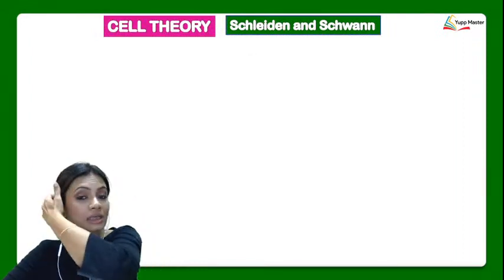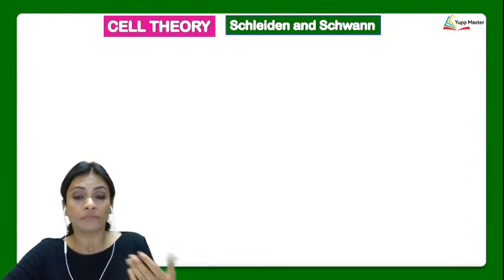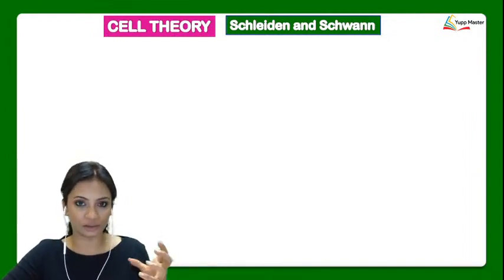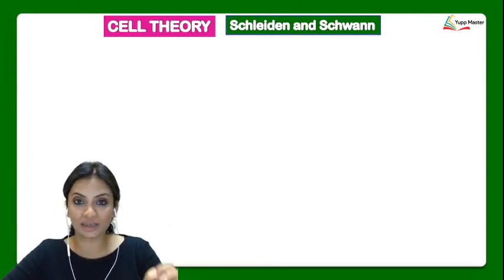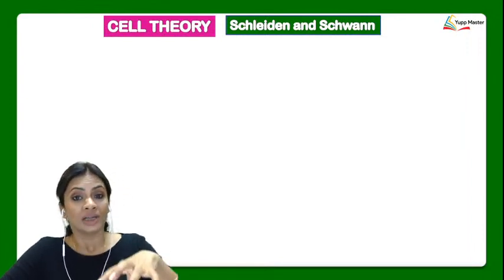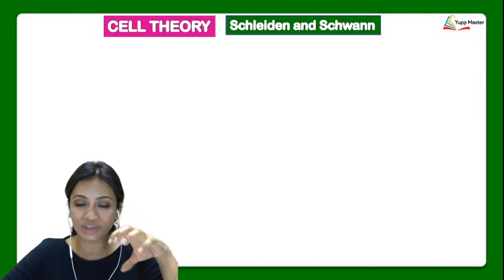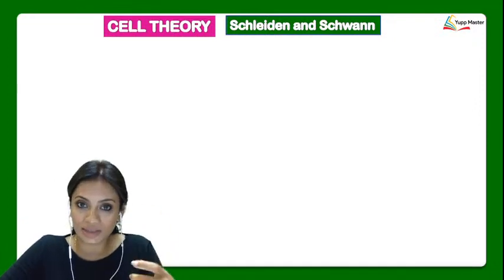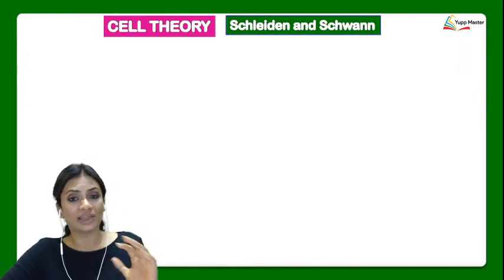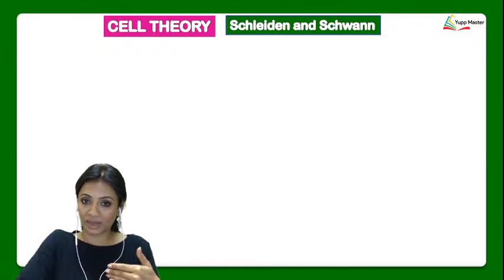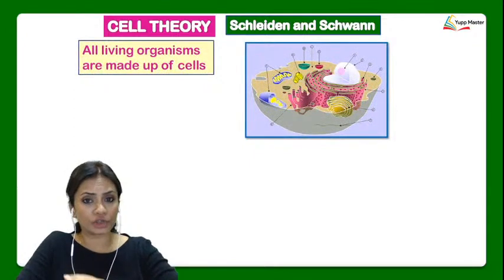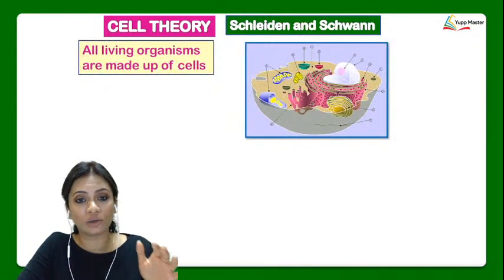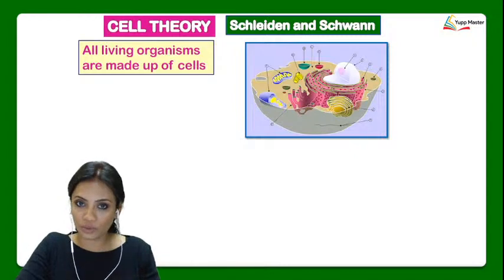Before we begin the prokaryotic cell, let's go through once again the important topics about the history of cell. In the history of cell, we learned about the cell theory, which was proposed by Schleiden and Schwann. Cell theory is a group of points which each and every cell must follow in order to be called a cell. The first point is that all living organisms are always made up of a cell.